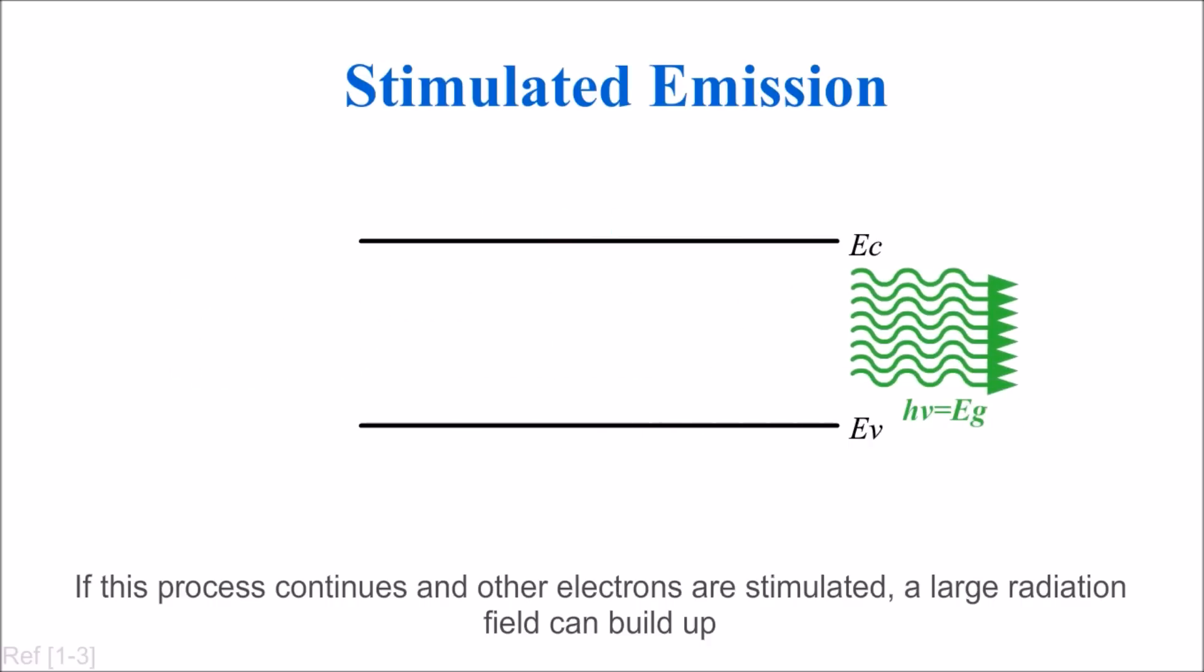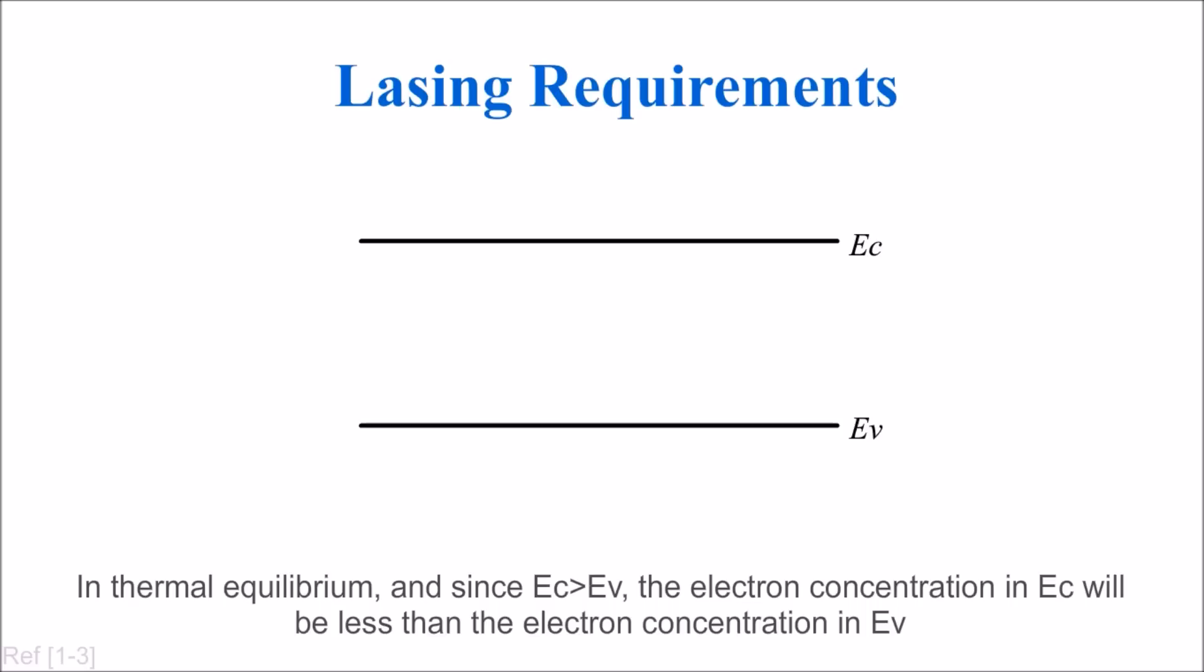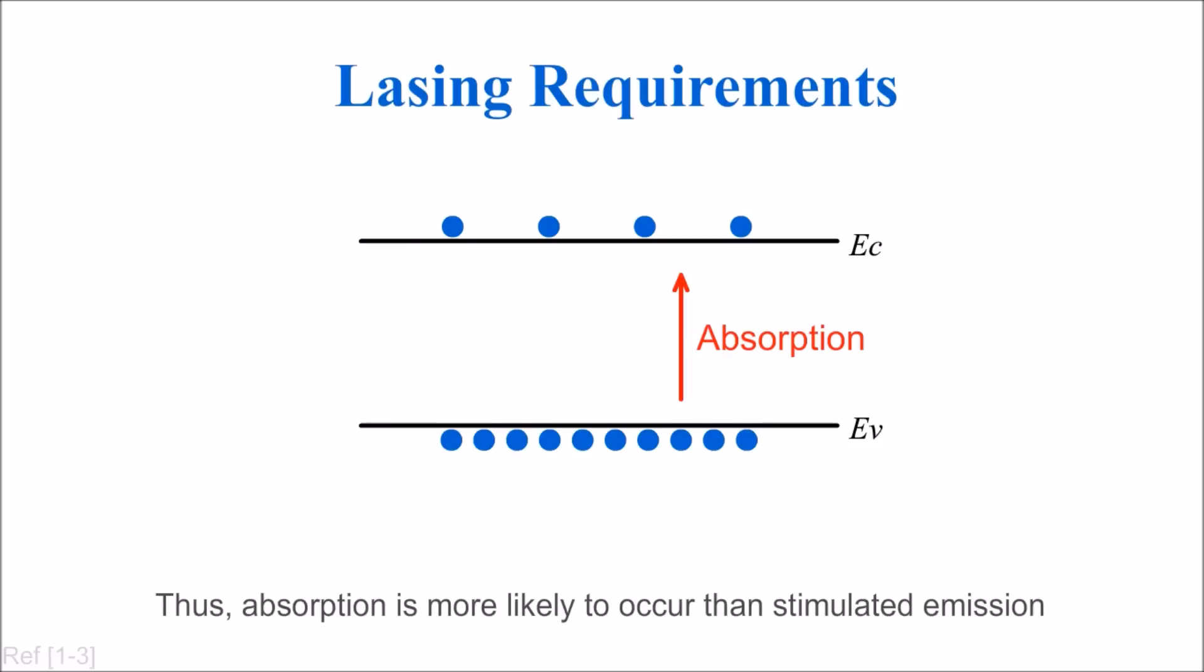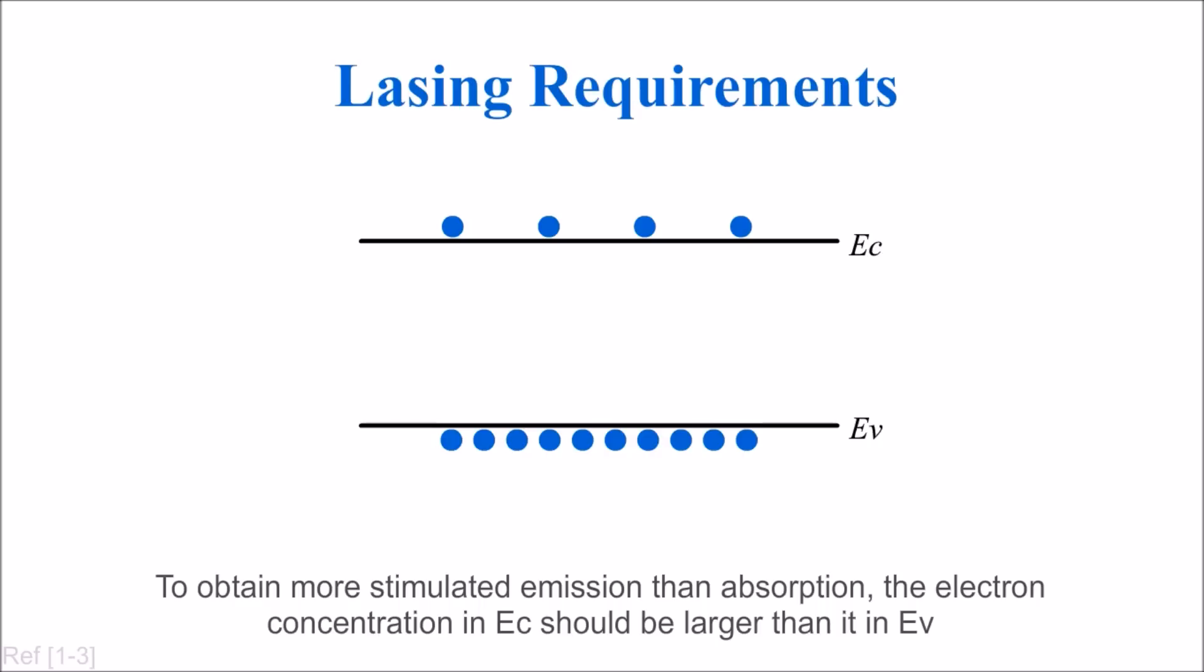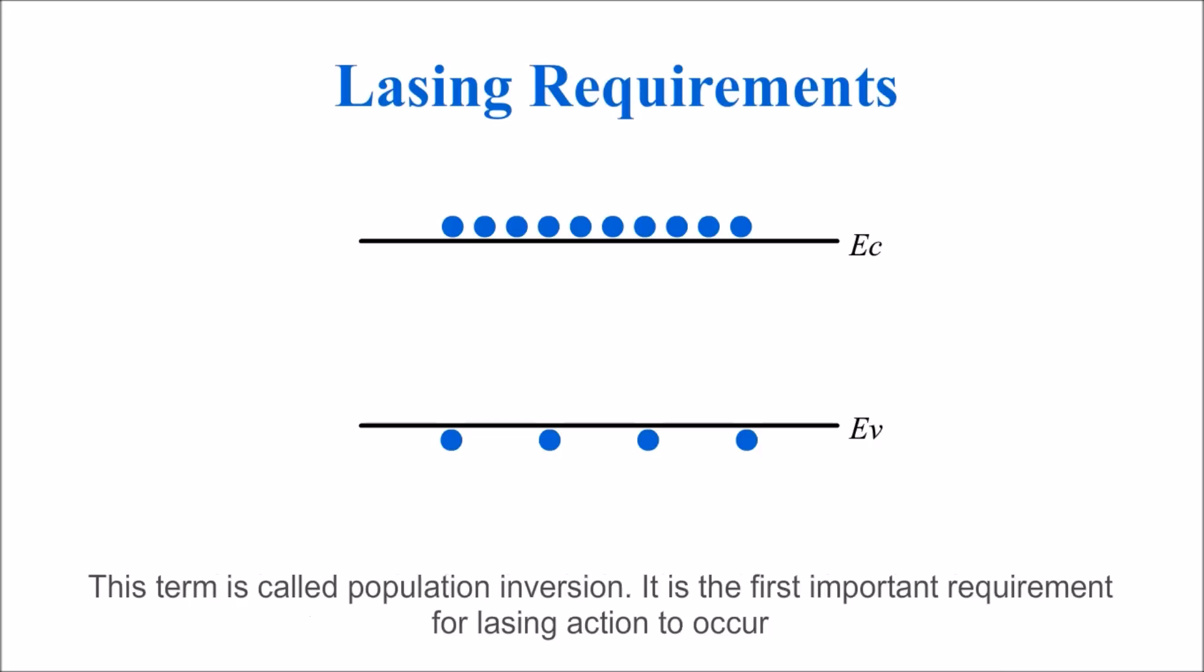In thermal equilibrium, since Ec is larger than Ev, the electron concentration in Ec will be less than in Ev. Thus, absorption is more likely to occur than stimulated emission. To obtain more stimulated emission than absorption, the electron concentration in Ec should be larger than in Ev. This is called population inversion.